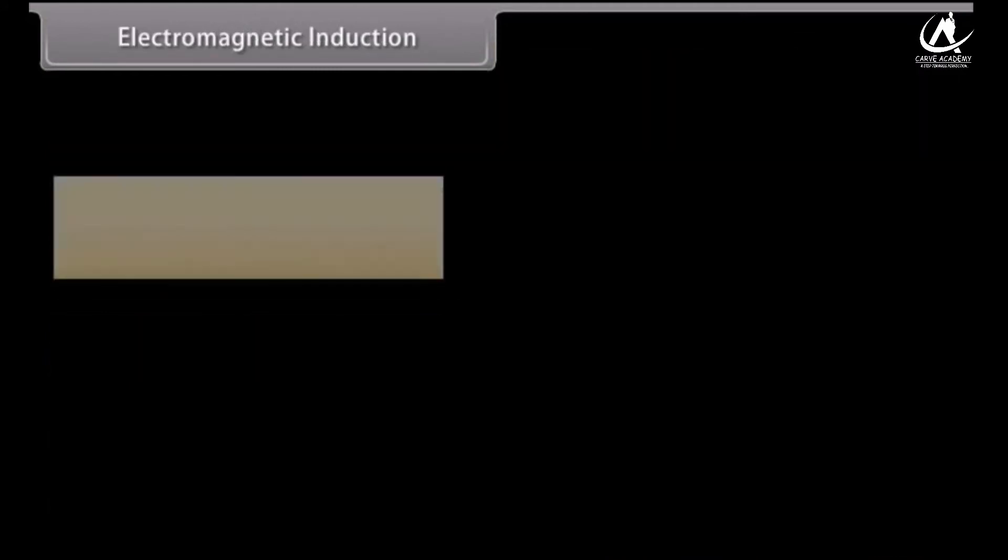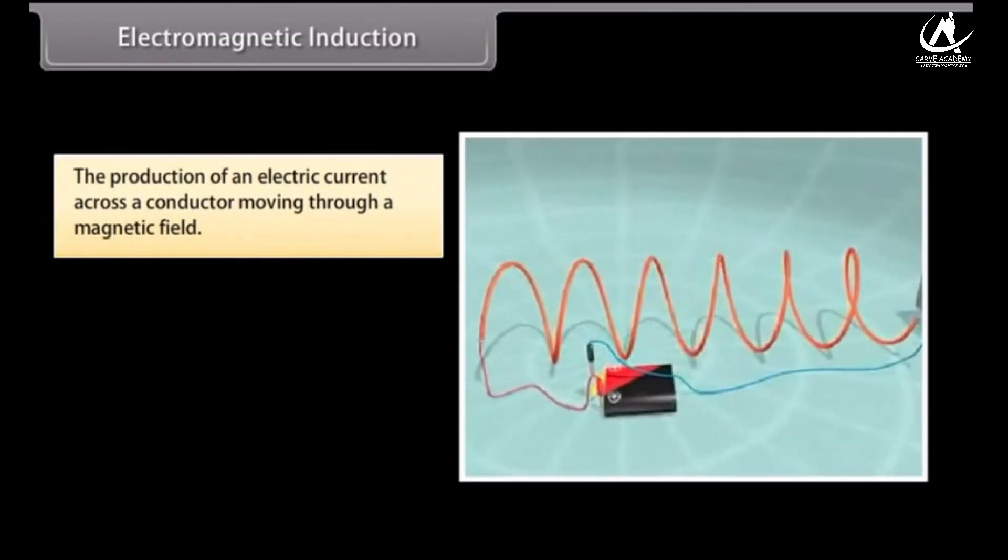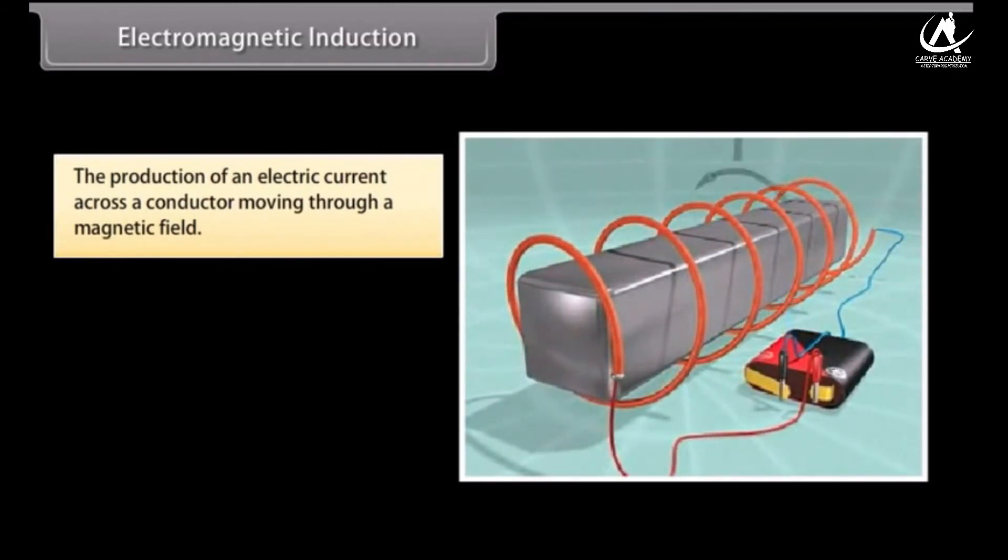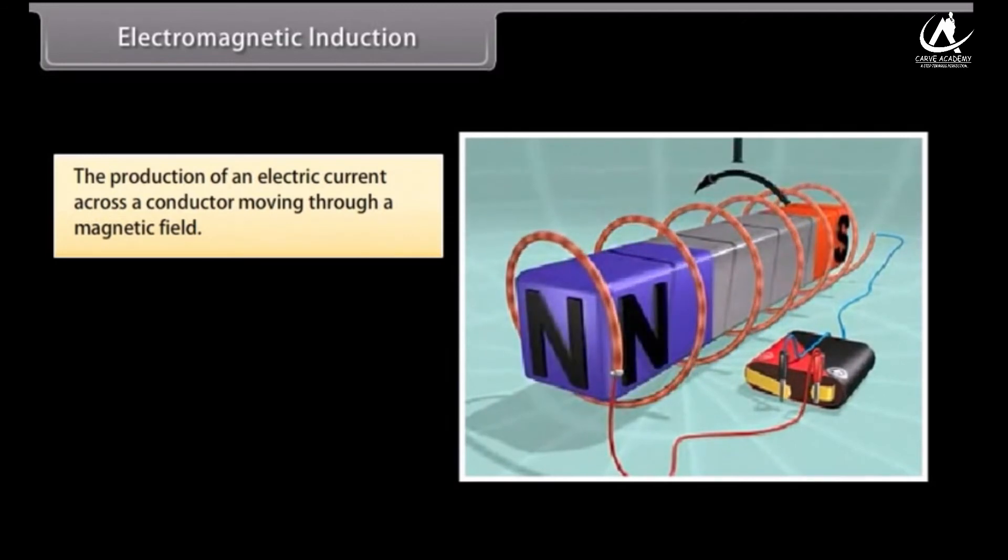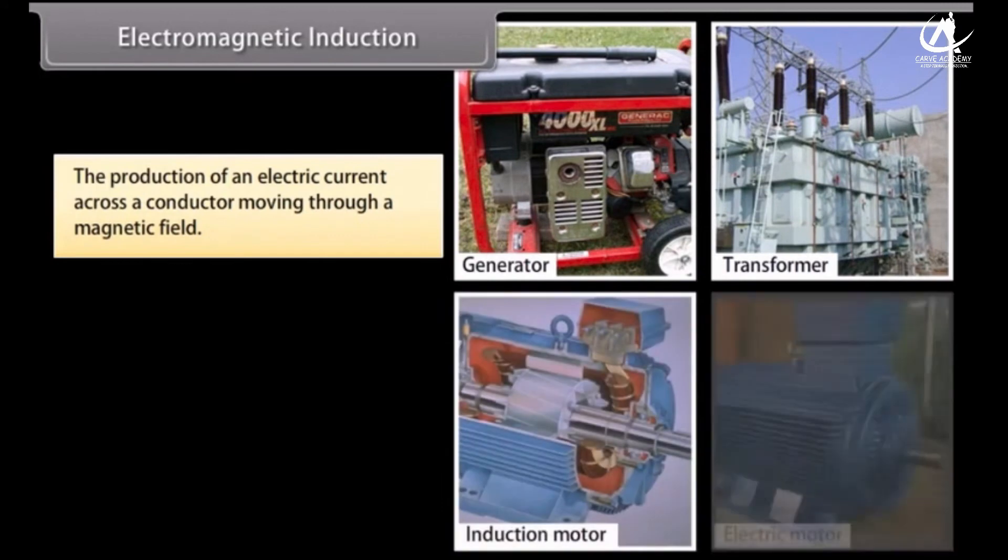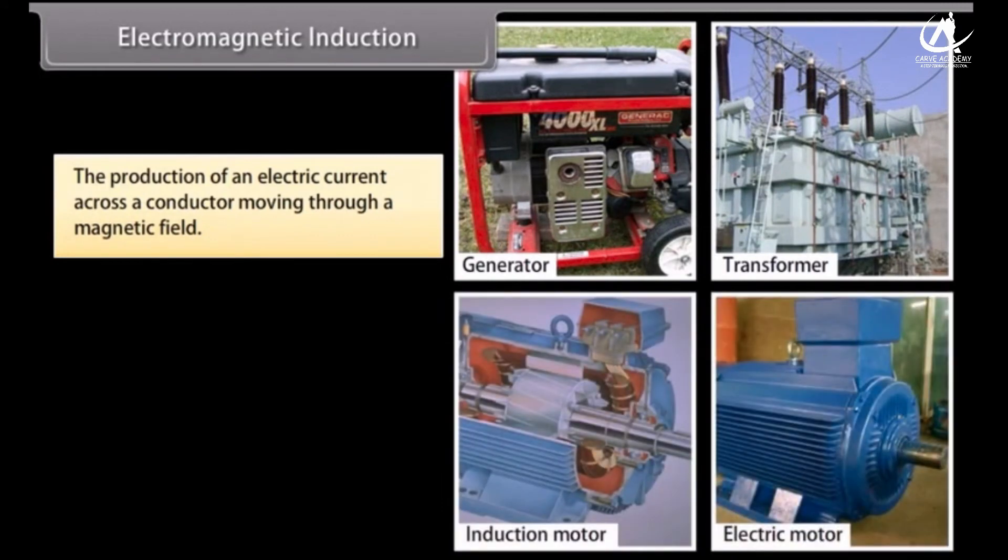Electromagnetic Induction. The production of an electric current across a conductor moving through a magnetic field is called electromagnetic induction. For example, generators, transformers, induction motors, electrical motors, synchronous motors, and solenoids all use electromagnetic induction.